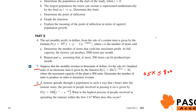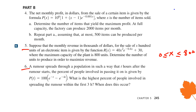Next is question number six. A rumor spreads through a population such that t hours after the rumor starts, the percent of people involved in passing it is given by P(t) = 100(e^(-t) − e^(-4t)). What is the highest percent of people involved in spreading the rumor within the first three hours? Again we have a maximum/minimum optimization question on a closed interval — we are looking for the maximum of P(t) when t is between 0 and 3.